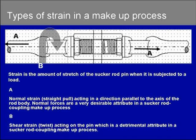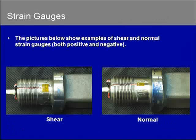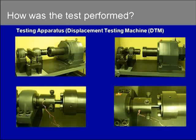Our overall goal in this project was to optimize factors such that normal strain is maximized and shear strain is minimized. These are illustrations of the strain gauges we used in our strain gauge test. The picture on your left represents a shear strain gauge and the picture on your right represents a normal strain gauge; both had the capability to measure strain in both positive and negative directions. This is the displacement testing machine we designed and built in-house — it has a gearbox large enough to shear the largest size of sucker rod, which is two and three-eighths inches.